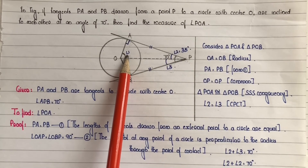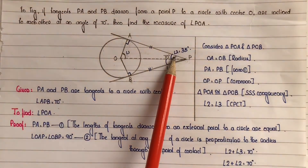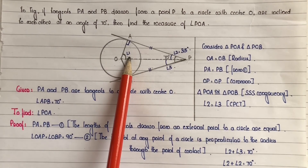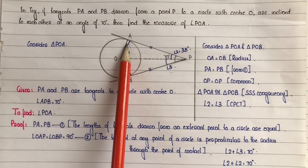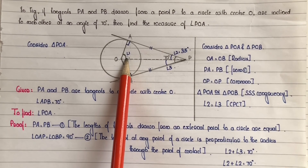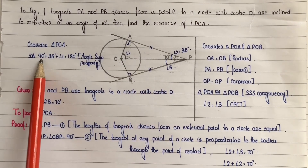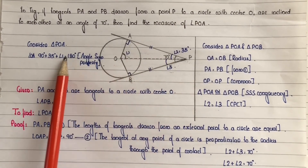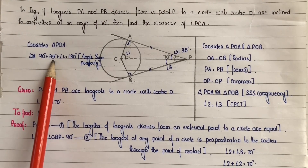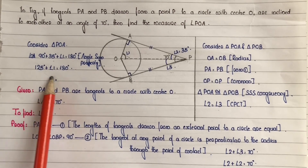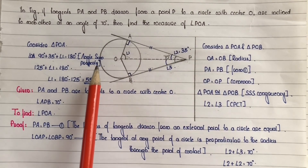For the last step, we find angle 1 by considering triangle POA. Angle A equals 90 degrees and angle 2 equals 35 degrees. Applying the angle sum property: angle A plus angle 2 plus angle 1 equals 180 degrees. That is, 90 plus 35 plus angle 1 equals 180 degrees, giving 125 plus angle 1 equals 180 degrees, so angle 1 equals 55 degrees. Therefore, the measure of angle POA is equal to 55 degrees.